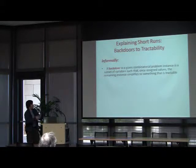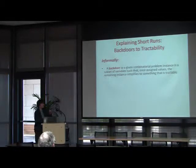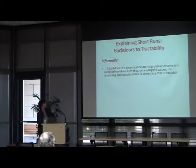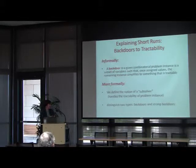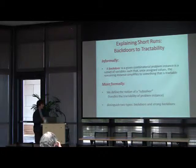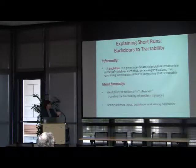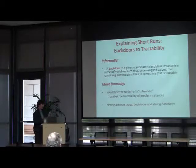What we proposed was the idea of a backdoor set. A backdoor to a given combinatorial problem instance is a subset of variables such that once you assign the right values to those variables, the remaining instance simplifies to something tractable. More formally, we define the notion of a sub-solver — something akin to polynomial-time heuristics built into the solver. We distinguish between strong backdoors, used to determine unsatisfiability, and normal backdoors, used to determine satisfiability.